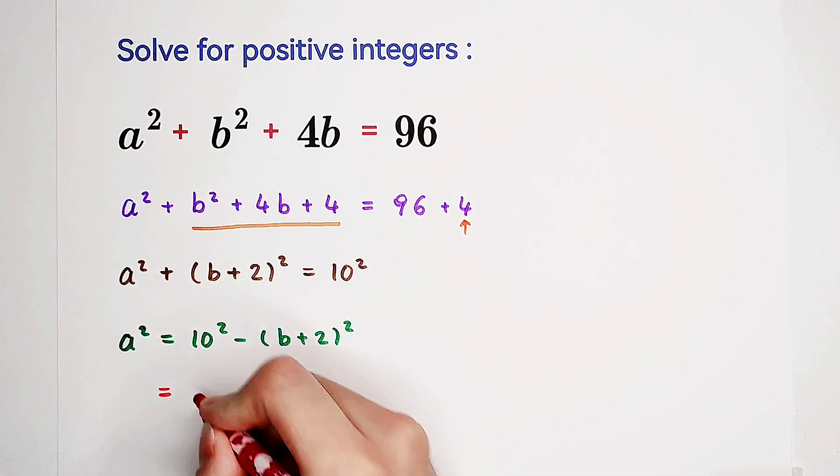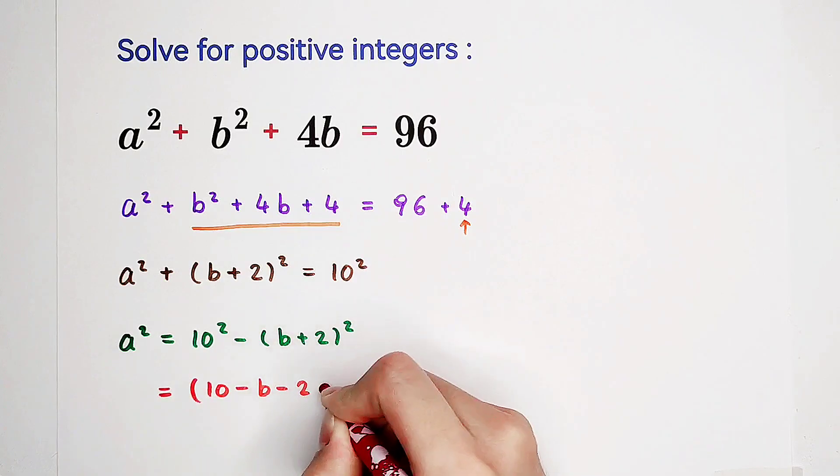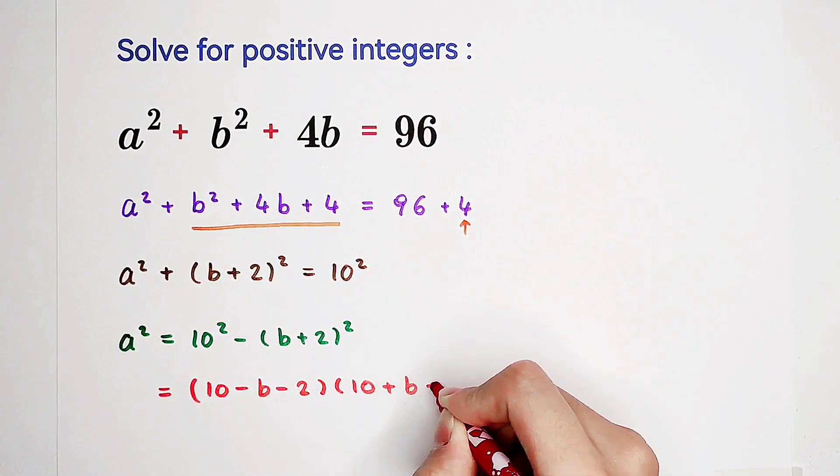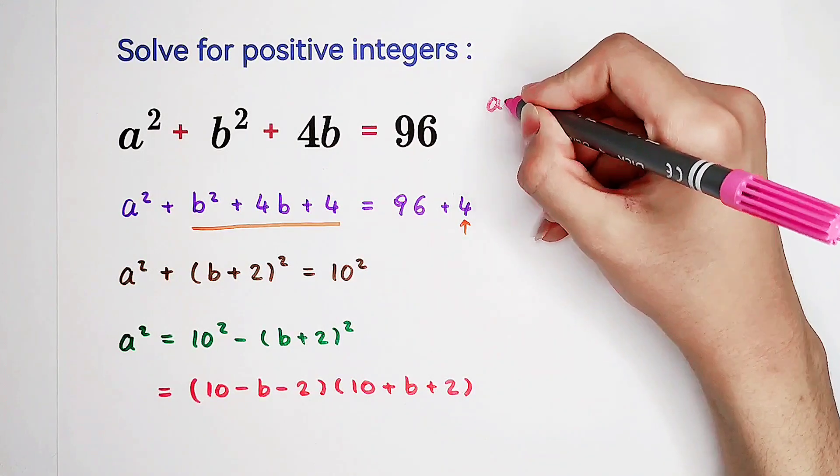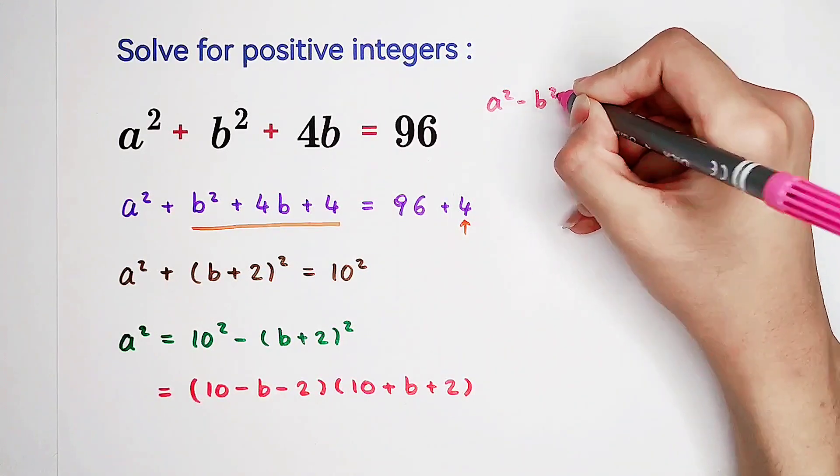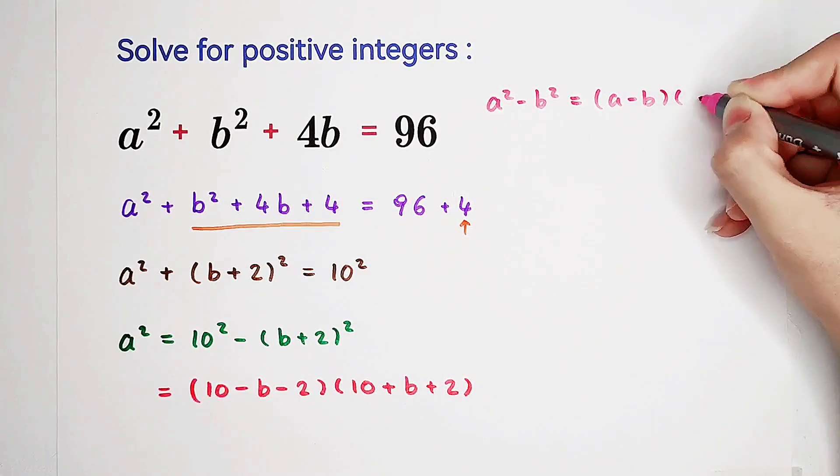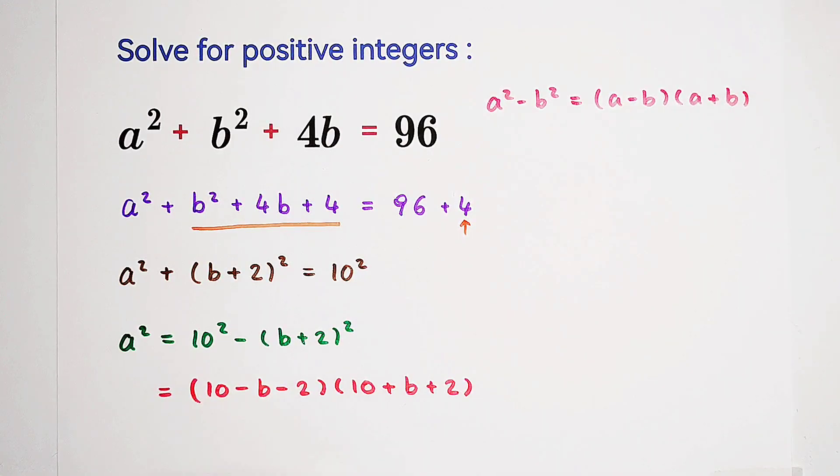So it is 10 minus b minus 2, then times 10 plus b, then plus 2. By using the formula a squared minus b squared equals a plus b, then times a minus b. So this one is 8 minus b, then times 12 plus b.